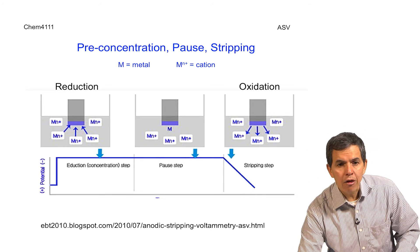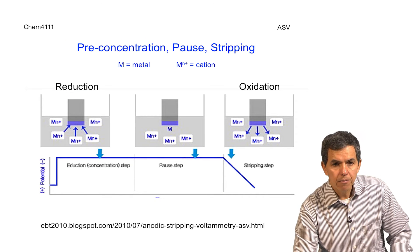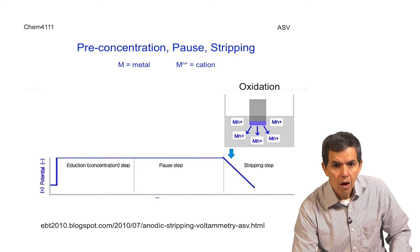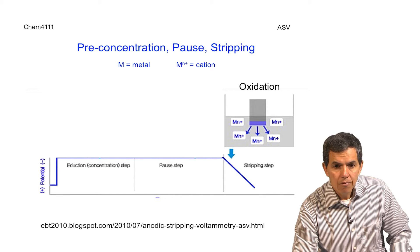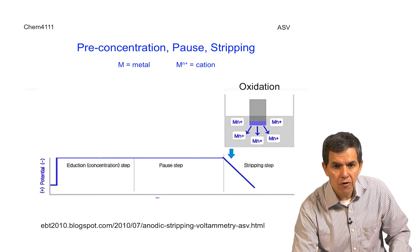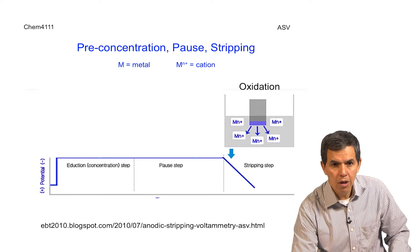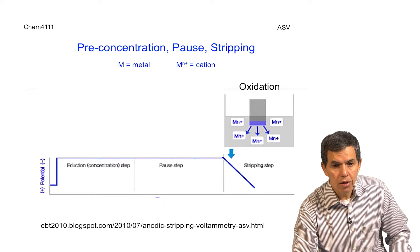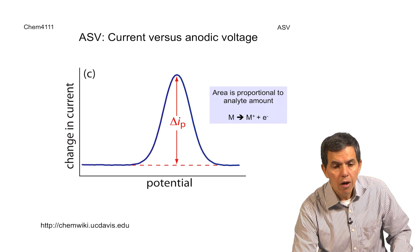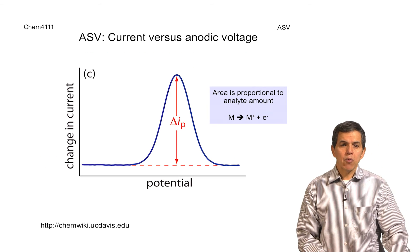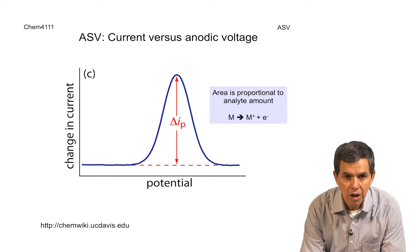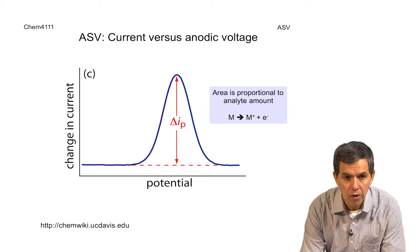So now let's go back and look at the three different steps that we mentioned before. We'll focus on the last step, which is the oxidation. During that step, we are reversing the voltage to now bring the metal deposited on the surface of the electrode back into solution as a cation or an oxidized species. When that happens, we can monitor the current that results from that process. And that is what we call the plot or voltammogram of current versus anodic voltage.